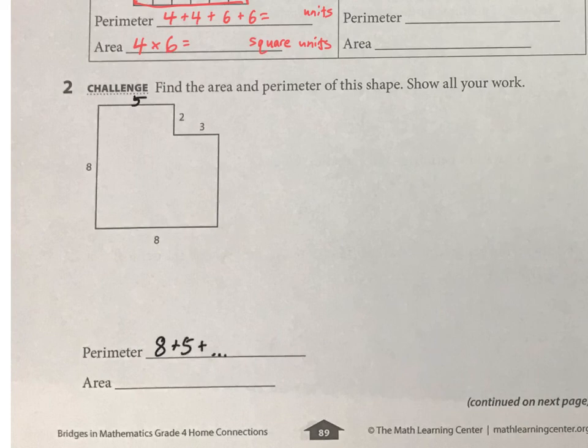Now, perimeter is going to be pretty simple. You can just add those up as you go around and figure out the perimeter. But the area of this is the part that's the challenge here, because it's not a rectangle that you can just multiply.